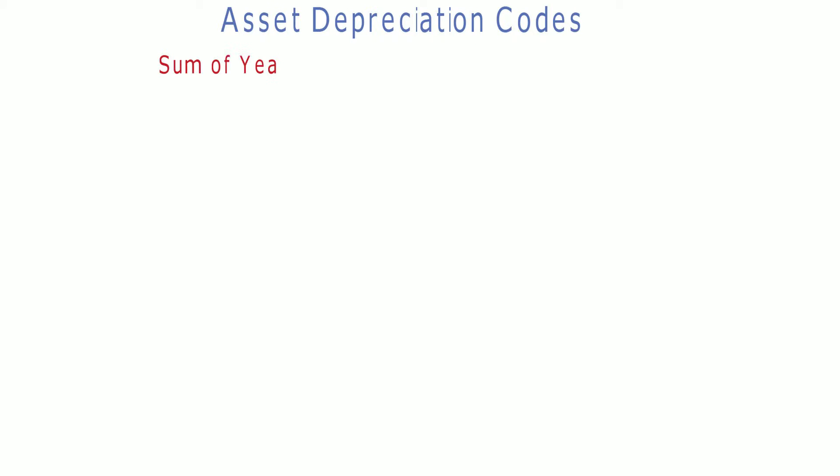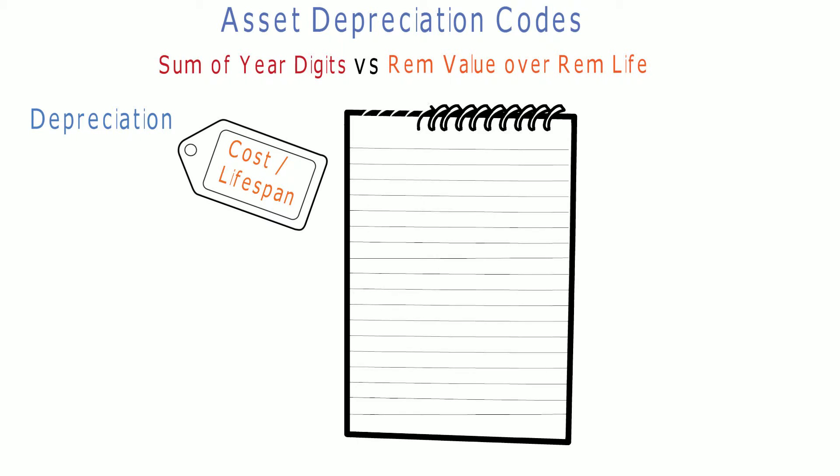Asset Depreciation Codes: Sum of year digits versus remaining value over remaining life. Depreciation is the method of allocating the cost of a tangible asset over its useful life.